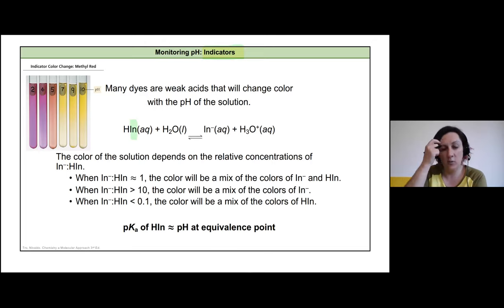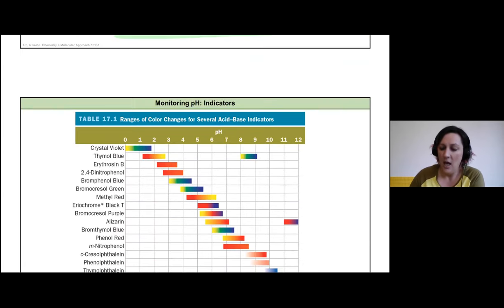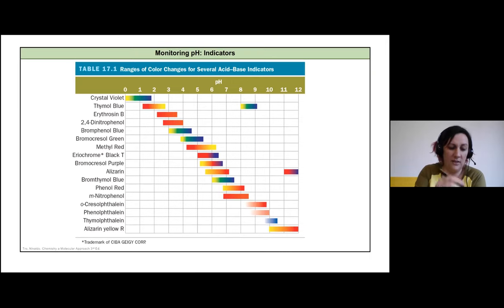In general, for indicators that are weak acids, we're going to see the PKa of that indicator be about the pH at the equivalence point as kind of an easy rule of thumb. But I prefer to actually use this chart when I think through things because I'm a pretty visual learner.